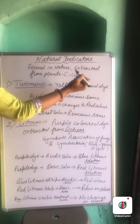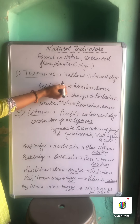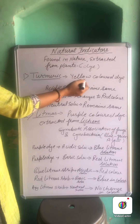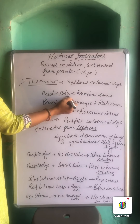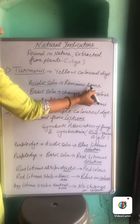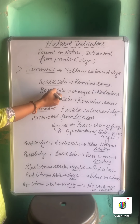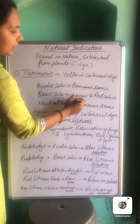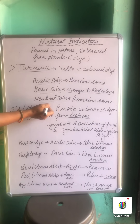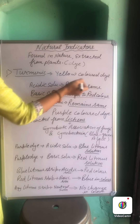Turmeric is a yellow colored dye through which we can identify and verify acids, bases, and neutral substances. If we add turmeric to the acidic solution, there is no change in color — it remains yellow. If we add turmeric powder to the basic solution, the color changes to red. For neutral solution, again there is no change and the color remains yellow.